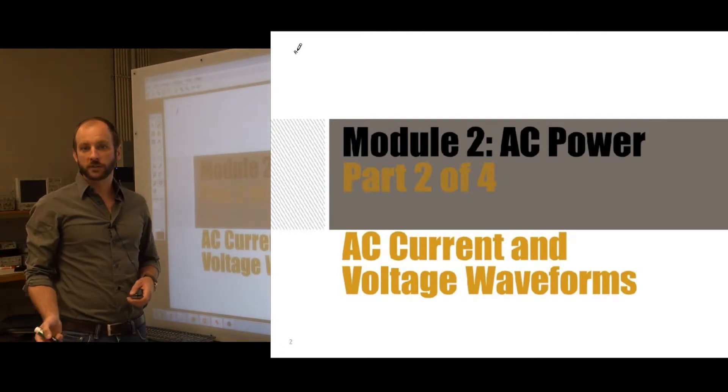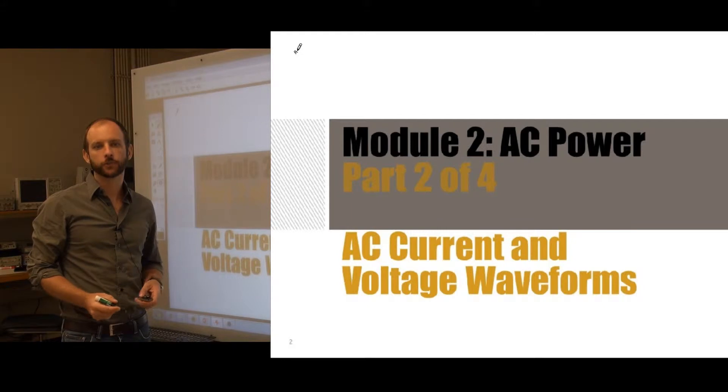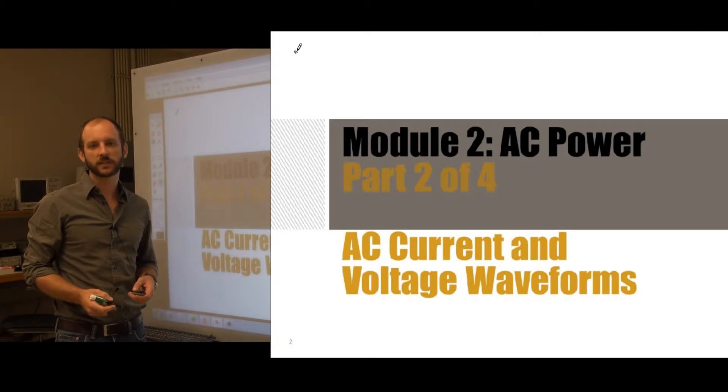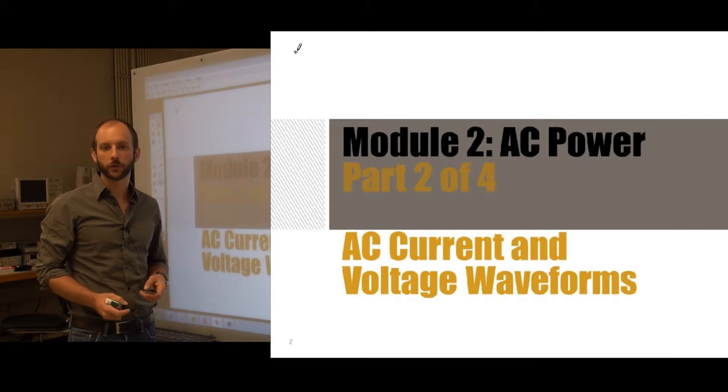In alternating current systems, the flow of electric charge periodically will reverse direction, unlike in a DC system in which the flow of electric charge is only in one direction. The abbreviations AC and DC are most often used to mean simply alternating and direct, as when they modify current or voltage.